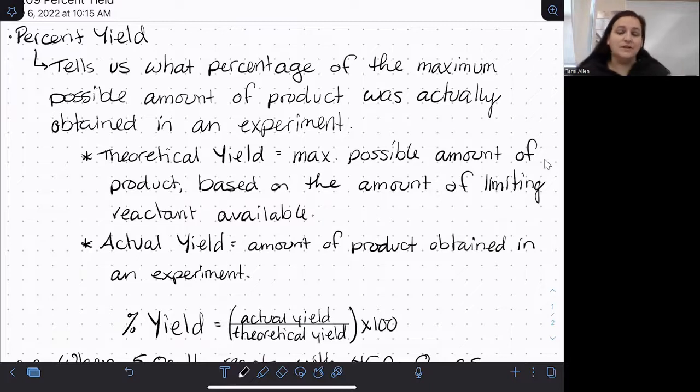If you get a percent yield above 100, that means that there's something else in there. What you think you have isolated is not just your product. So percent yields above 100 are possible to be calculated. You can't have actually made more product than was possible. But for some reason, it looks like you made more product than was possible because there's something else in your sample.